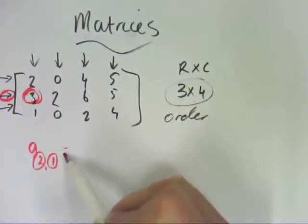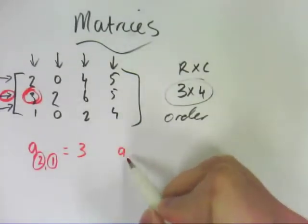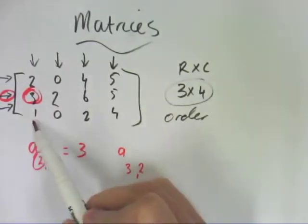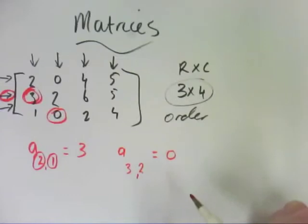So A21 is actually the value 3. If we were chasing A32, that would be the third row, the second, so that would be value 0.